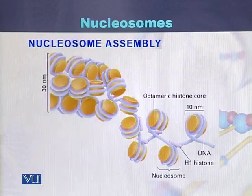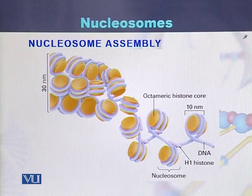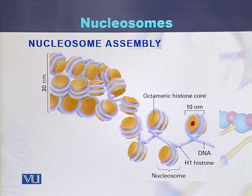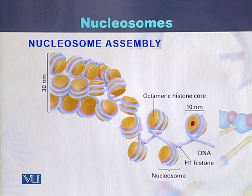Here is the diagram of the nucleosome. We can see a ball, and this ball consists of 8 molecules of histones — 2 molecules each of H2A, H2B, H3, and H4.